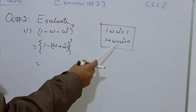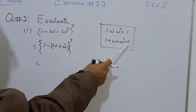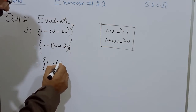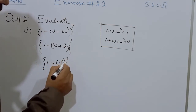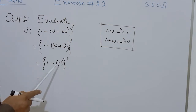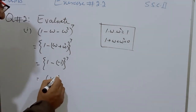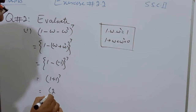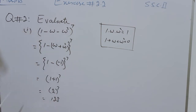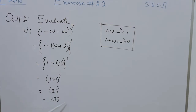Omega plus omega squared equals minus 1 because when we transfer the 1 to the other side, it becomes minus. So we have (1 minus (minus 1)) to the power of 7. This minus and that minus are both multiplying, so minus times minus becomes plus. We will have (1 plus 1) to the power of 7, which is 2 to the power of 7, and 2 to the power of 7 means 128. So the value of (1 minus omega minus omega squared) to the power of 7 is 128.